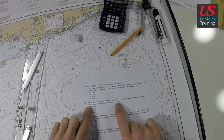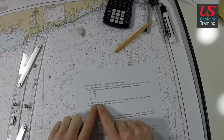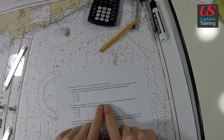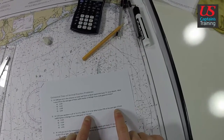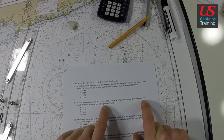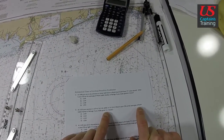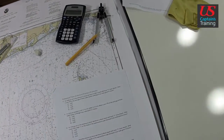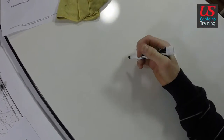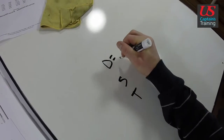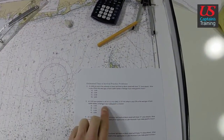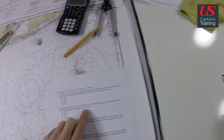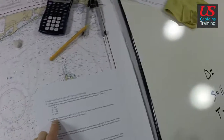Estimated time of arrival practice problem 2 reads: at 11:03 your position is latitude 41 degrees 12.5 north, longitude 71 degrees 37.4 west. What is your ETA at the west gap of Point Judith harbor of refuge if you make good 11.3 knots? We need to find the start point and the end point. We know we're going to use distance, speed, and time. Our speed is 11.3 nautical miles per hour, and 11:03 is when we left.